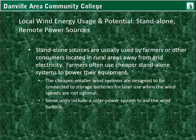Standalone sources are usually used by farmers or other consumers in rural areas. These smaller and cheaper standalone systems power their equipment and pumps, and they've been doing that for quite some time. The cheaper, smaller wind systems are designed to be connected to storage batteries for later use when wind speeds are not optimal. Some may be a DC source, requiring storage and then conversion to alternating current later on. Some units include a solar power system to aid the wind turbine — that's called a hybrid system — so that if the wind has died down and it's still sunny, you're still getting power.